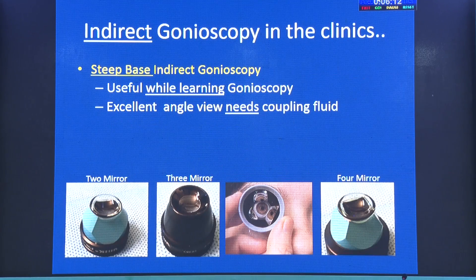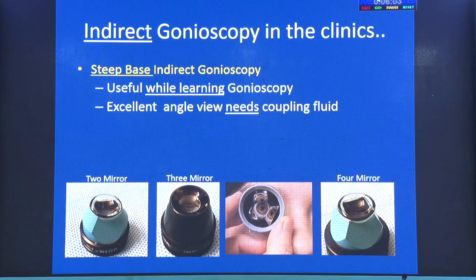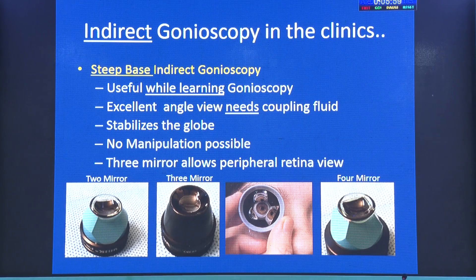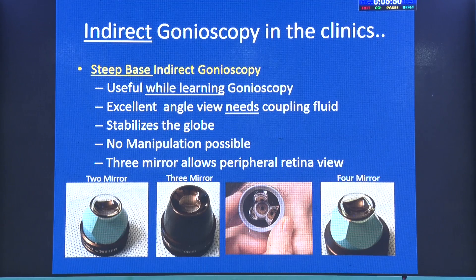The steep base curve indirect gonioscopy is very useful while learning. Since it is steep, you need a coupling fluid, and that coupling fluid stabilizes the globe — making it easier when you are learning. The only disadvantage is that no manipulation is possible. If it is the three-mirror type and the pupil is dilated, you can also visualize the peripheral retina.